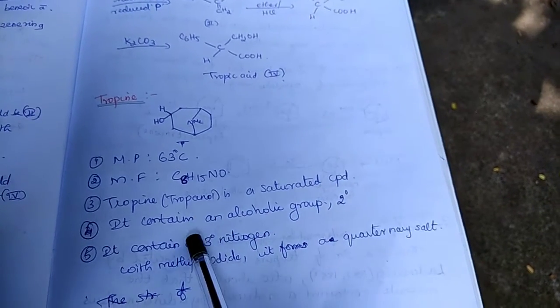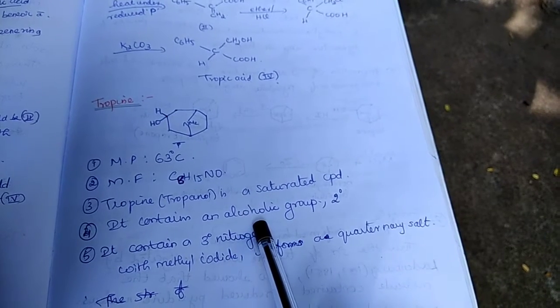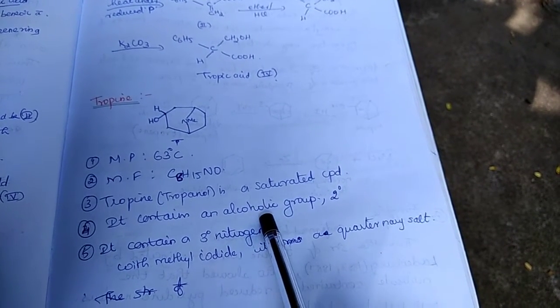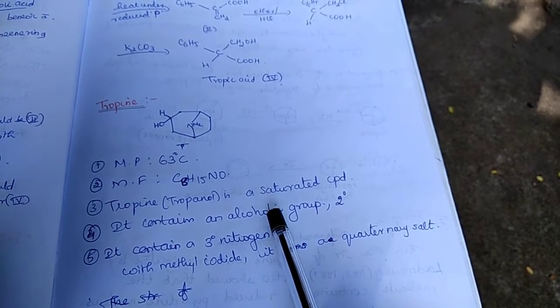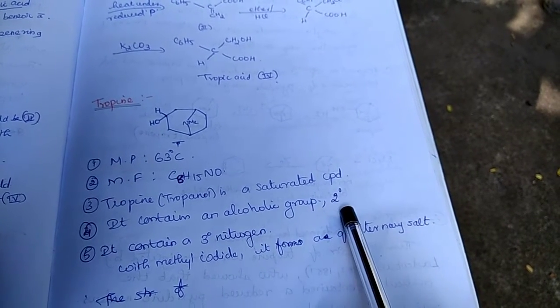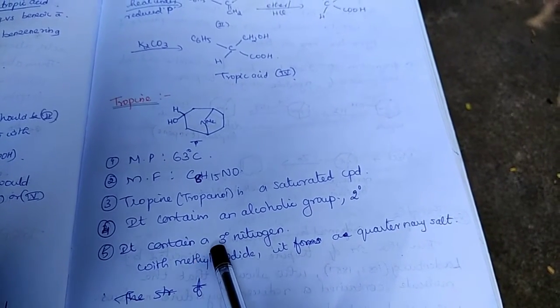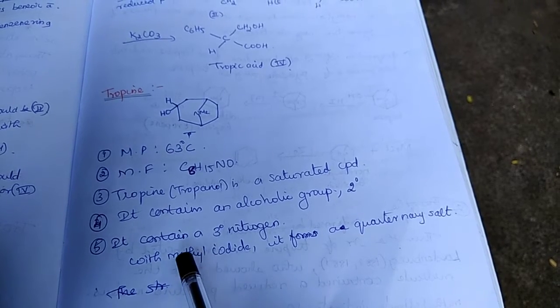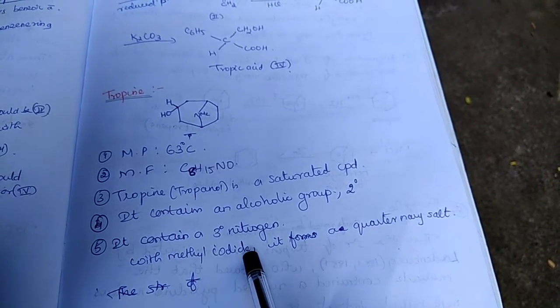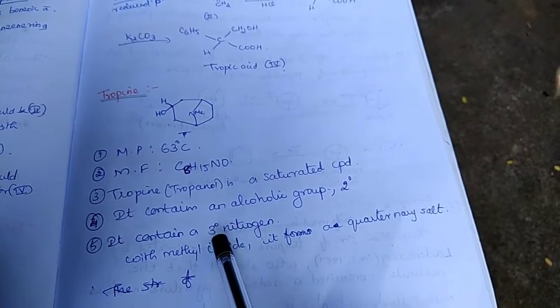It contains an alcoholic group which can be determined by the common test, acetylation or benzoylation. And the nature is found by oxidation as secondary alcoholic group. And the nitrogen is tertiary in nature, which is identified by treating tropine with methyl iodide. We get a quaternary salt, so we can say the nitrogen is tertiary in nature.